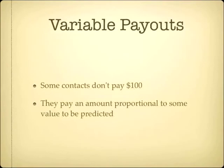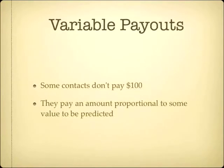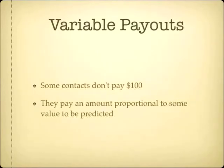Where the prediction market is trying to decide if an event is going to happen or not, the payouts are typically $100 or nothing. However, if you're trying to predict a number — like a percentage — then the payout for the shares can be a value proportional to the number you're trying to predict.